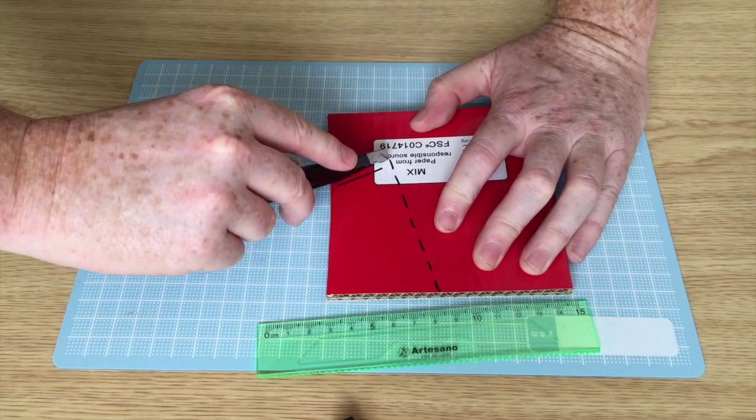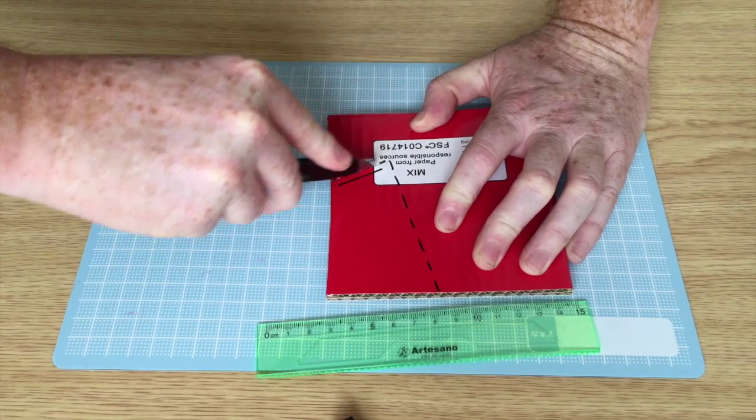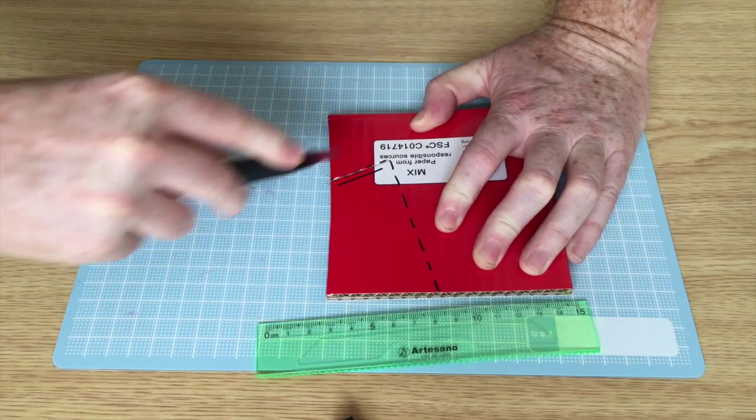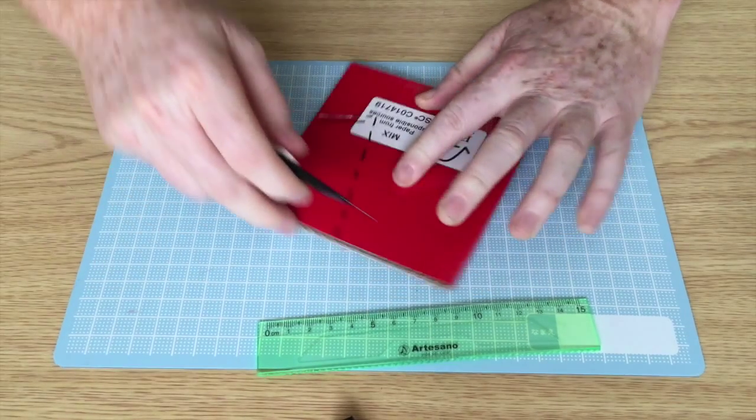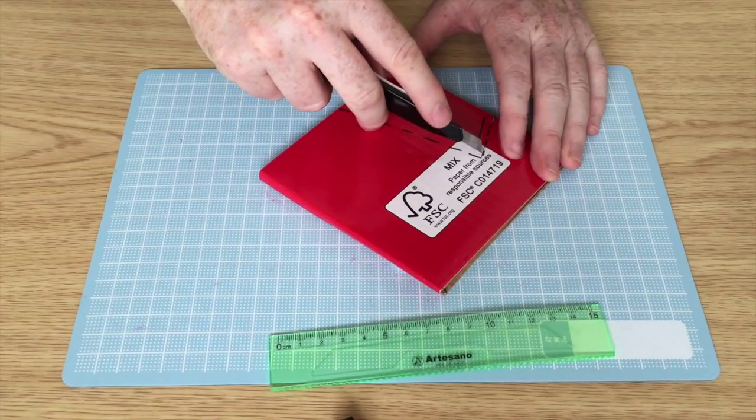And then I'm going to just cut through this. If you go from the corner out, that's the best way. So I'm going to turn this and I'm going to cut along the long edge.